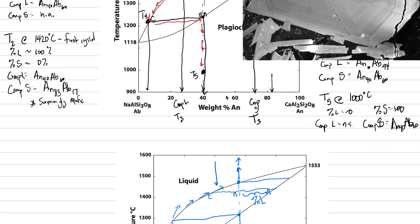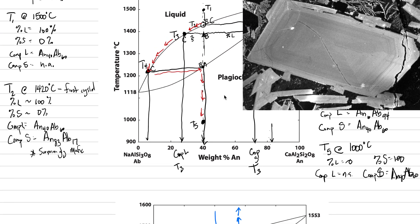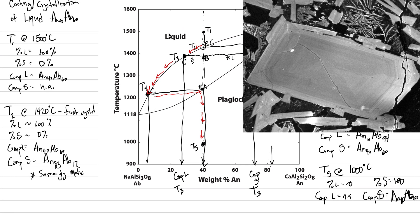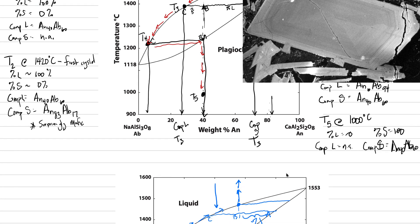That is the process of solid solution. I would recommend doing a Google search for 'binary phase diagram solid solution' — most textbooks show albite to anorthite or fayalite and forsterite as the classic examples.